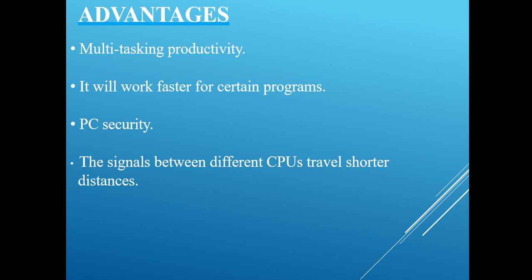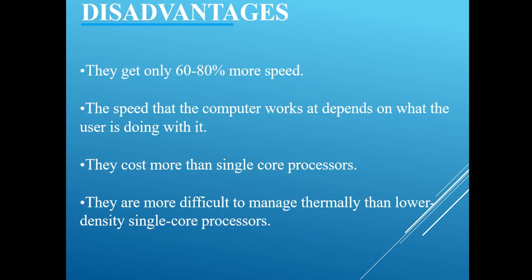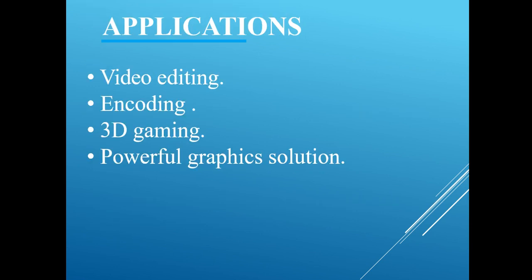Multi-core processors also have disadvantages. You get only 16 to 18 percent more speed, and computer performance depends on what you are actually doing. They are also more costly and difficult to manage and deploy.